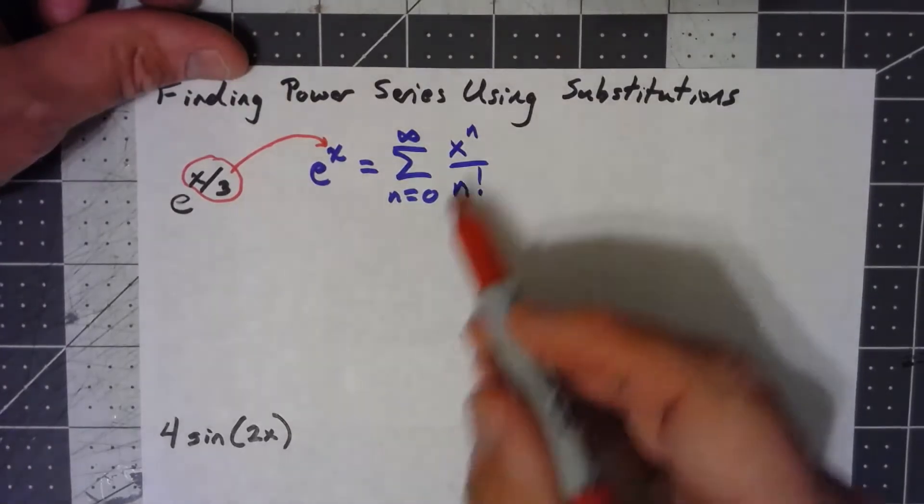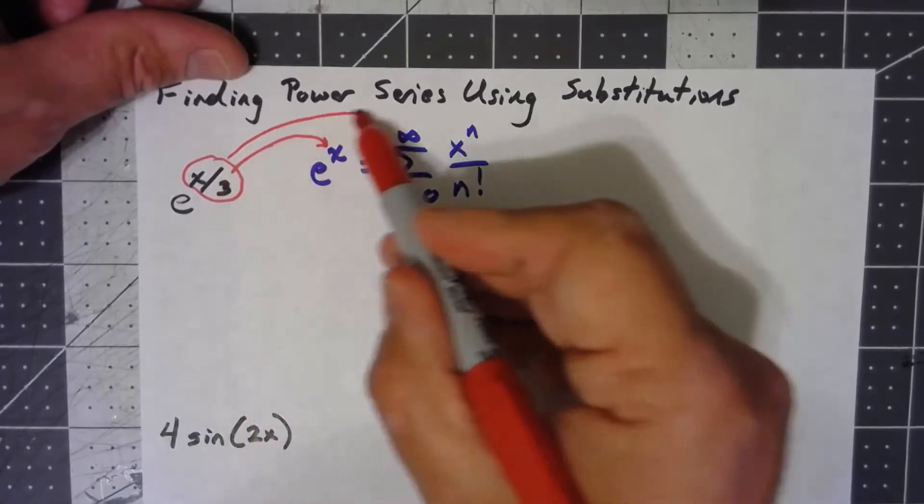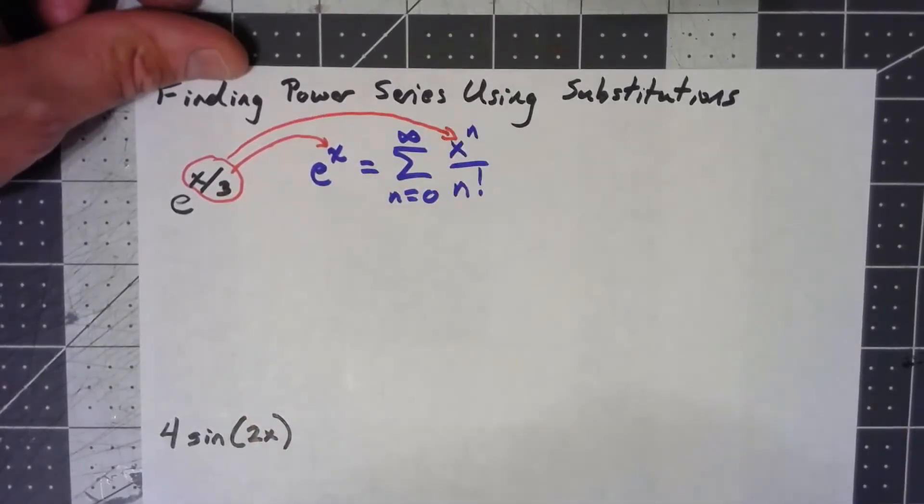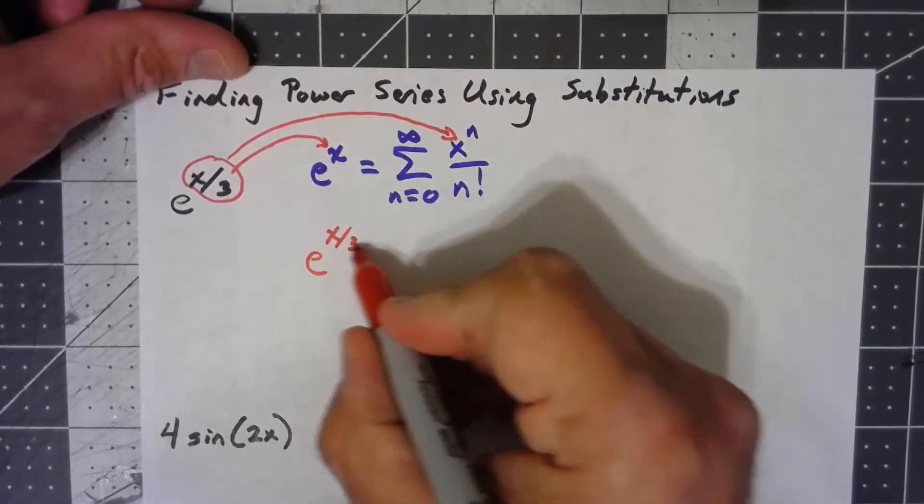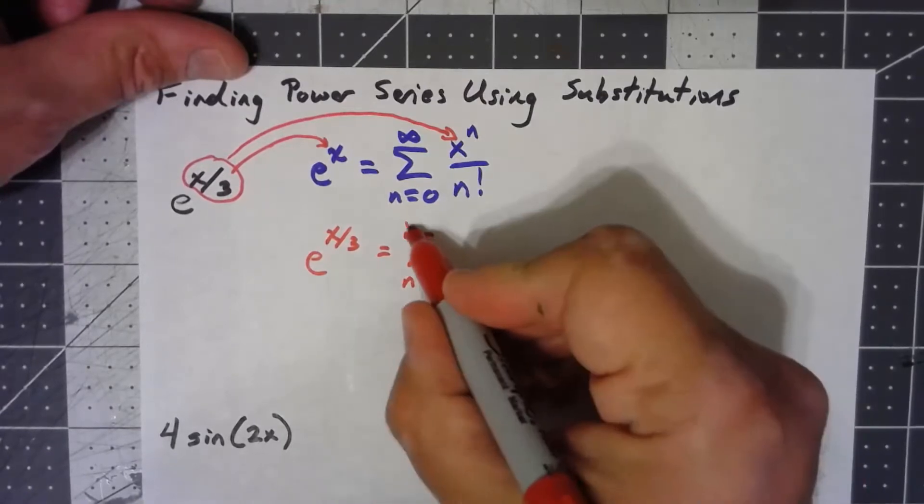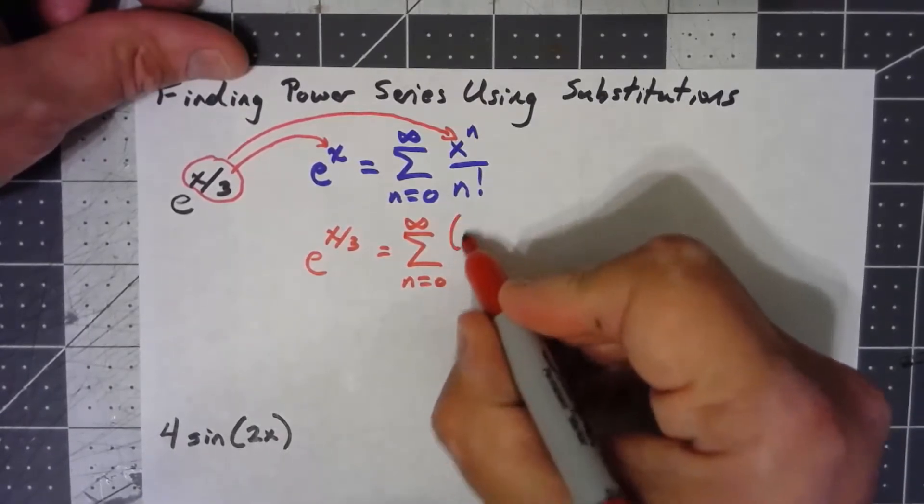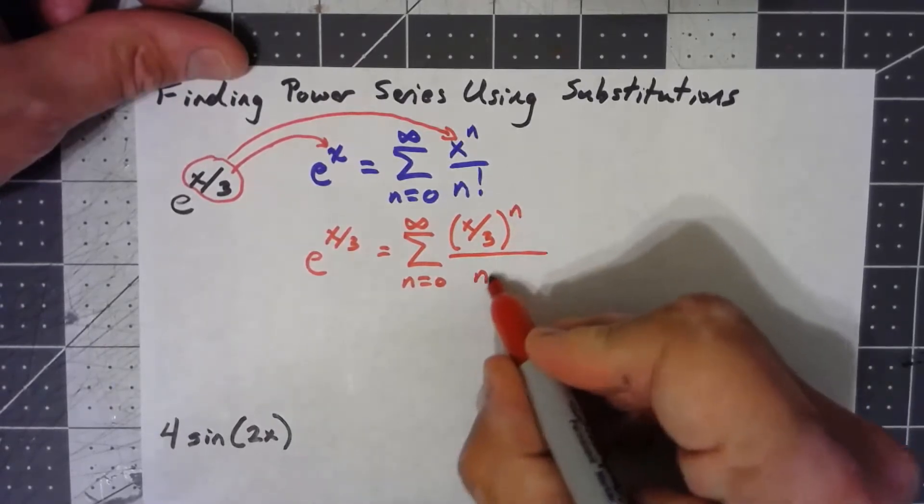So all I need to do is take this formula right here, this whole summation, and plug in x over 3 in for x there. So e to the x over 3 is the sum from n equals 0 to infinity. I've got x over 3 to the n over n factorial.